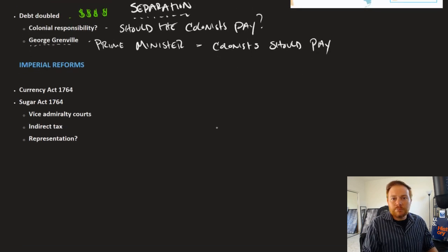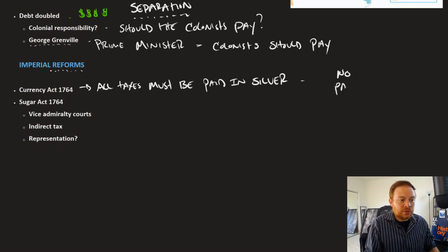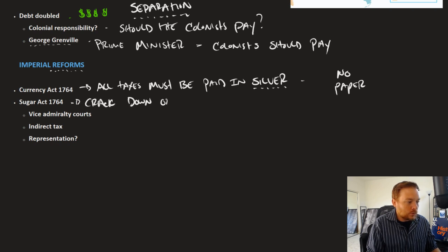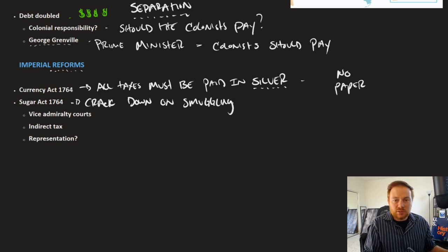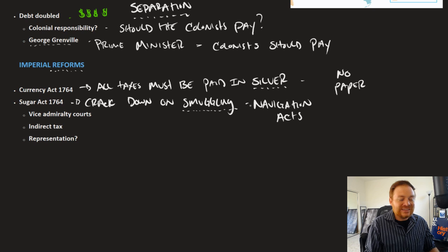Some of the laws that Grenville begins to place on the colonies include the Currency Act, which says all taxes must be paid in silver. In other words, no paper money — the colonies would print their own money, but Great Britain wants to be paid back in something of real value. The Sugar Act is a crackdown on smuggling, bringing us back to the Navigation Acts, which had put strict rules on who the colonists could trade with. The colonists ignored those rules and there was a lot of smuggling going on, and the Sugar Act seeks to crack down on that illegal trade.